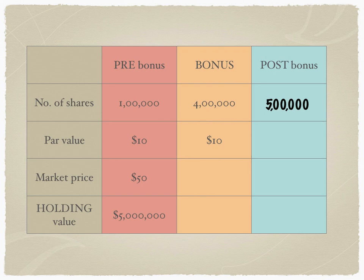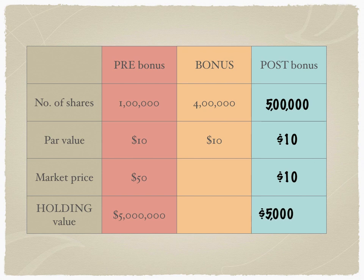Please understand the difference in how the ratios are interpreted. The par value remains the same in a bonus issue. The market price will come down — not because the par value changed, but because there are now five times more shares in the stock market. With that surge in liquidity and supply, prices come down on the record date. The holding value of the post-bonus holding and the pre-bonus holding would remain the same at five million dollars.